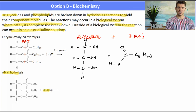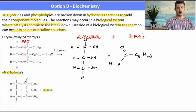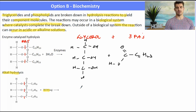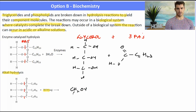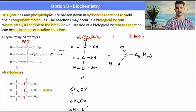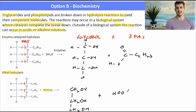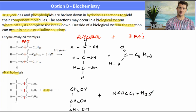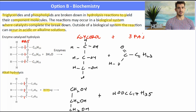We can also have the same procedure in a laboratory setting. If we have an alkaline solution — for instance KOH — we could mix the triglyceride with some hydroxide and we will form our glycerol and three fatty acids. There'll be three of those fatty acids produced and there'll be no water because the water has gone into breaking the ester link.